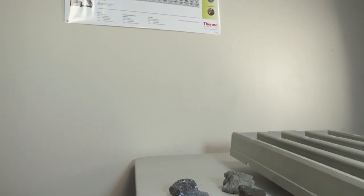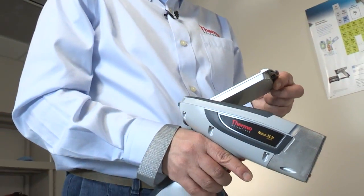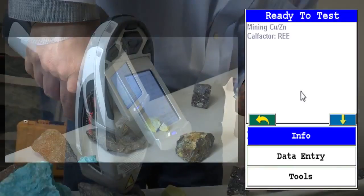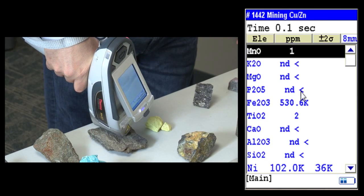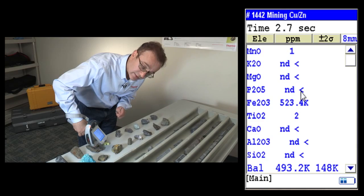Now, let me show you how you can use this on one of these samples that I have here. I can adjust the screen to view the area. It has the camera that shows the analyzed area. As long as the window is against the sample and you pull the trigger, you can analyze the sample.